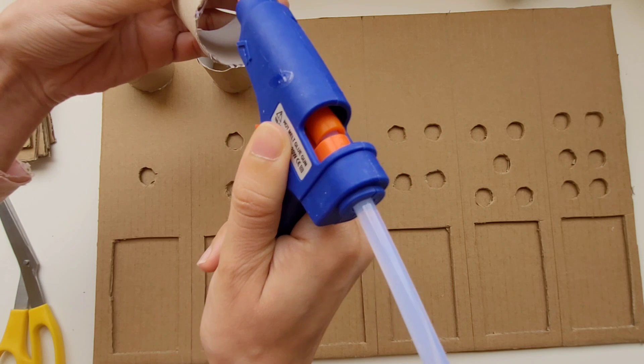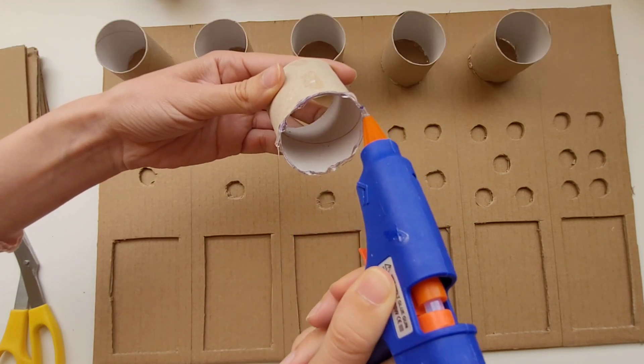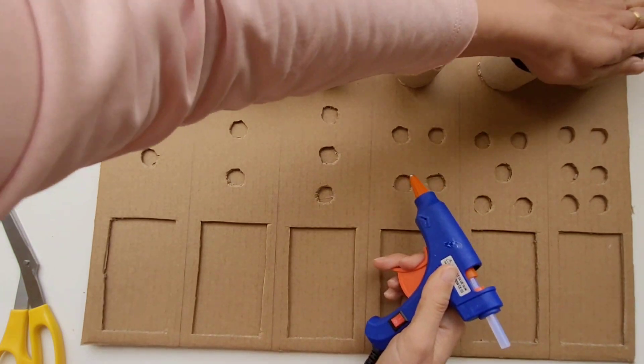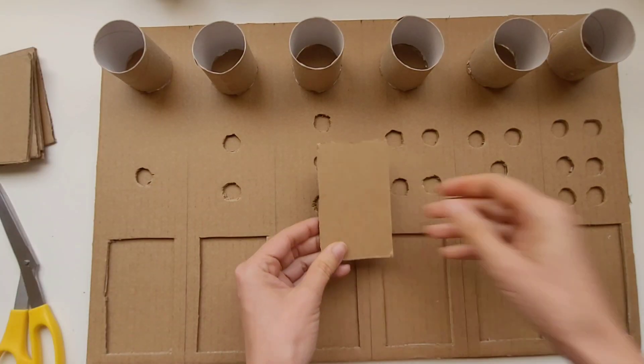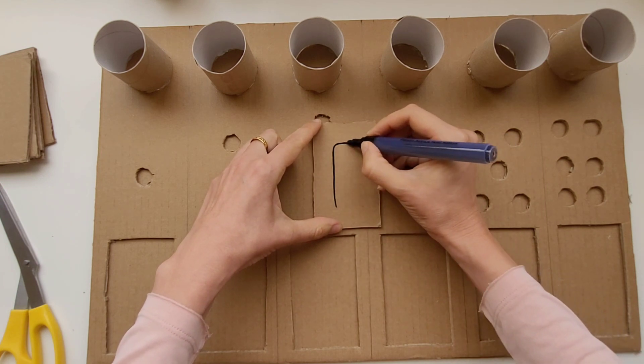After I'm done with that, I'm going to start making the numbers. I'm going to take the little pieces of cardboard that we cut off before, the rectangles, and I'm going to draw a number on each one. I'm going to start out with one.